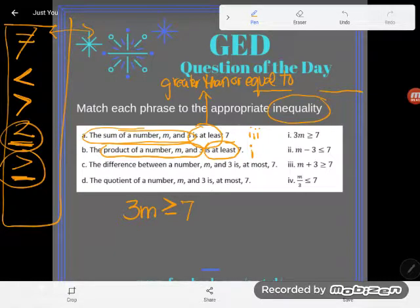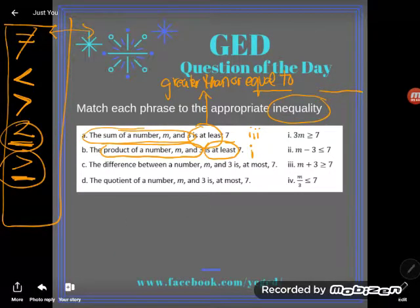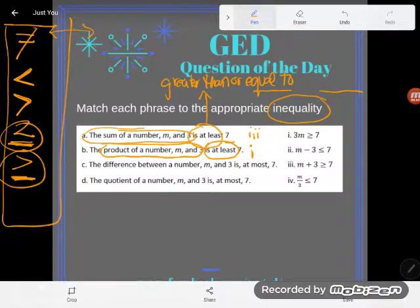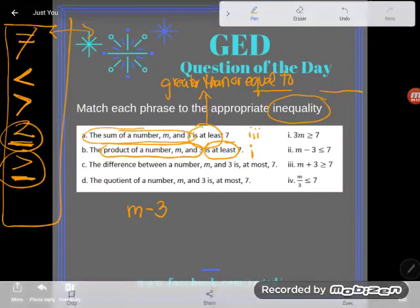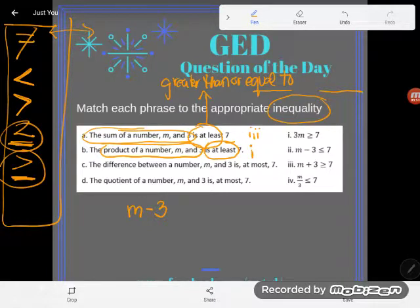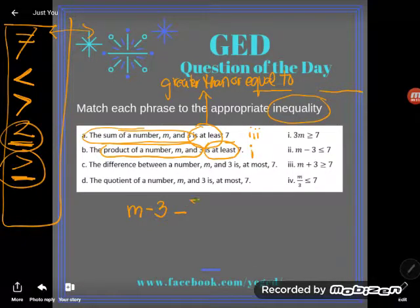Now let's look at C. C says the difference between a number M and 3. So difference means to subtract the two numbers. So I'll take M, I'll subtract 3. The difference between a number M and 3 is at most 7. So is at most it's okay to be equal to 7? Or I could be less than 7, but no more than that. At most 7.